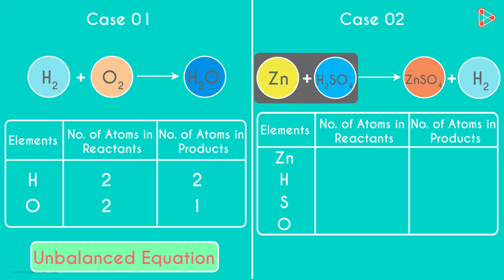On the left, the number of atoms of Zinc is 1, and that on the right is also 1. And similarly, we find out the remaining cells of these three elements. What do you observe?